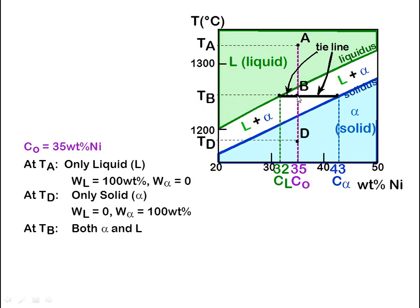The more complex case is at temperature Tb, where both liquid and solid phases exist. Drawing a horizontal line from Tb, it intersects the liquidus line at one point and the solidus line at another. Drawing vertical lines from each intersection, we find the liquidus composition is 32 weight percent nickel and the solidus composition is 43 weight percent nickel. Applying the lever rule formula gives solid percent = 73% and liquid percent = 27%.